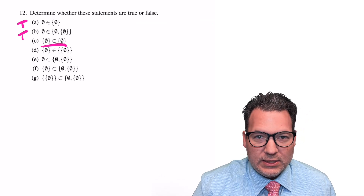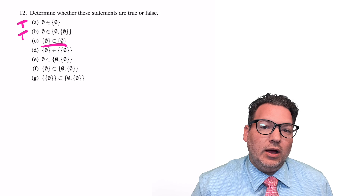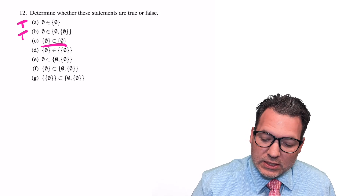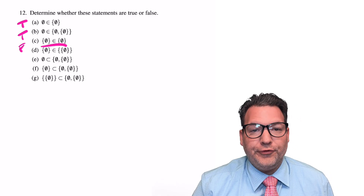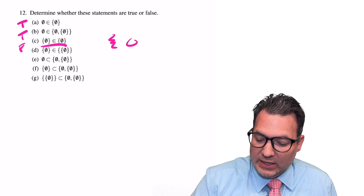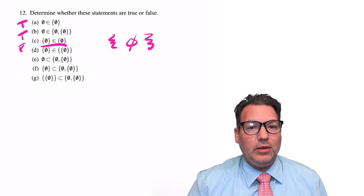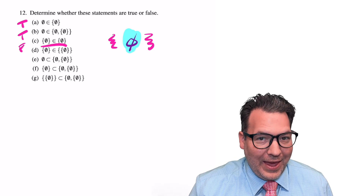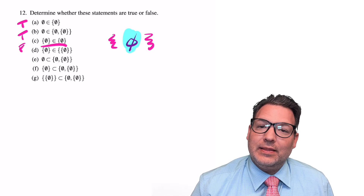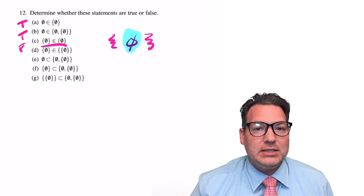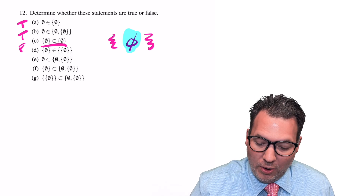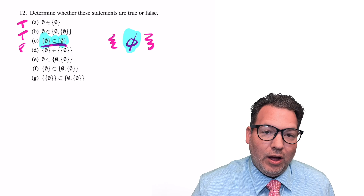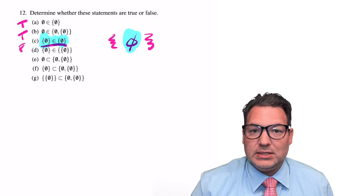C: is the set that contains the empty set an element of the set that contains the empty set? This is going to be our first one that answers false. The set that contains the empty set has only one element — the empty set itself — and the empty set is not the same as the set that contains the empty set. So no, the set that contains the empty set is not an element of the set that contains the empty set.